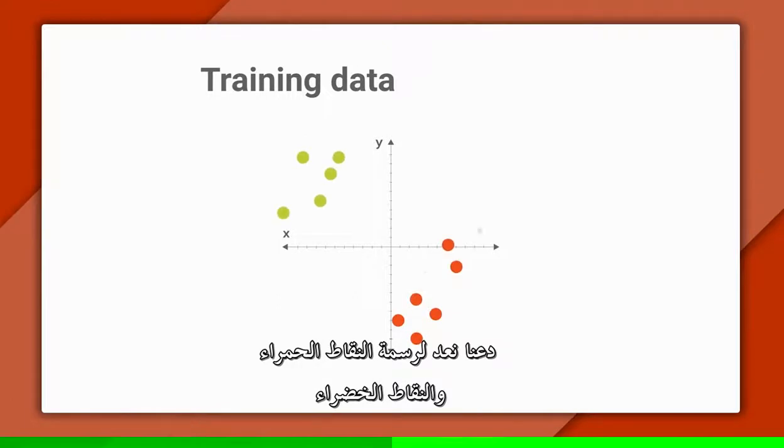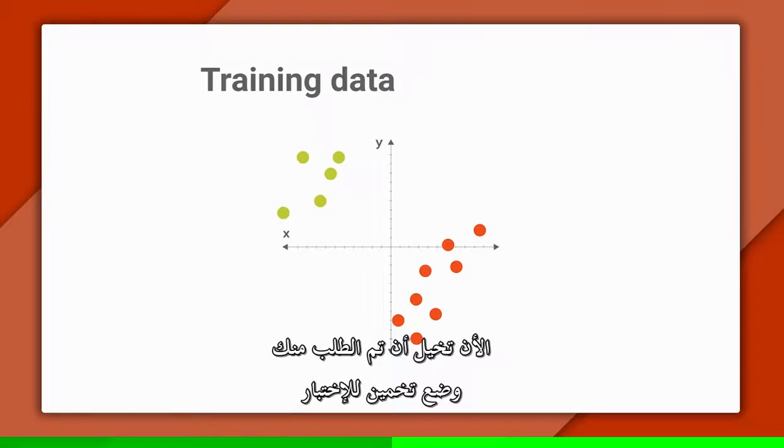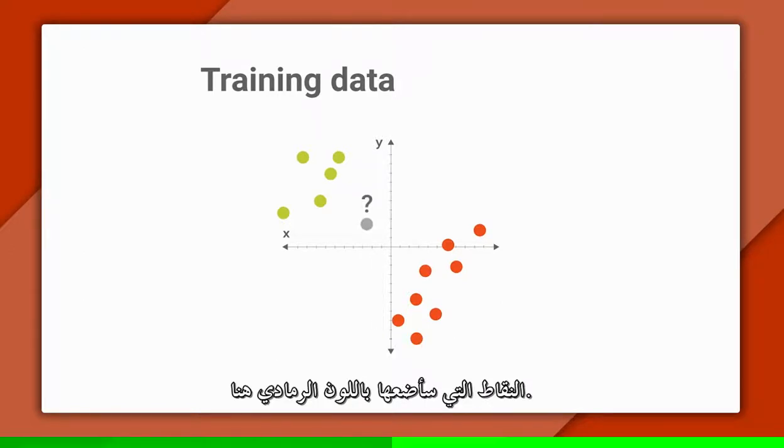Let's return to our drawings of green dots and red dots from the last episode. Imagine the dots we see on the screen are the training data we memorized in the fit method, say for a toy dataset. Now imagine we're asked to make a prediction for this testing point that I'll draw here in gray.